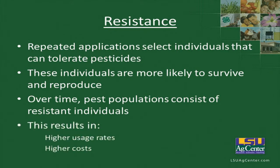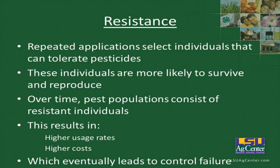This results in higher use rates, causing higher costs to the producer — what we call the pesticide treadmill. That first insecticide gave very good control, but as we use more and more of it, we have to keep moving forward and using more of that product. There are many examples of pesticide resistance, not only in insects, and eventually this leads to control failure, requiring a different product.